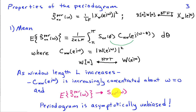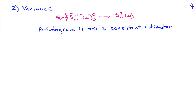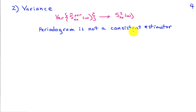For finite L, it has some bias reflected by the window function, and the resolution — or ability to distinguish details between two frequencies — is limited by the window function. For the variance, under a variety of assumptions, the variance of this periodogram estimator behaves like the square of the true power spectrum, and that's independent of L. So even as L gets big, the variance doesn't decrease, and we would say that the periodogram is not a consistent estimator, because a consistent estimator requires the variance to go to zero as the number of samples L goes toward infinity.